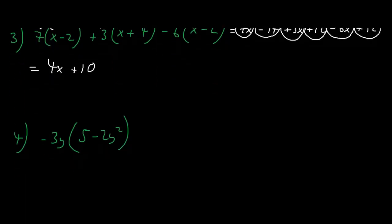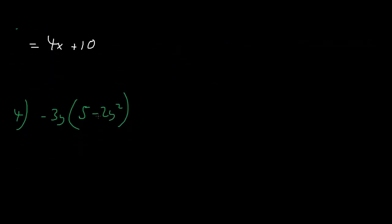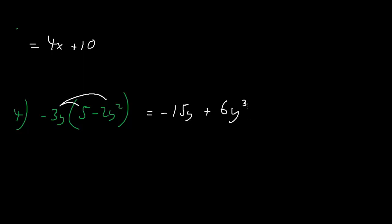Now let's move to expression number 4. Here minus 3y times 5 is minus 15y. And minus 3y multiplied by minus 2 times y squared is equal to 6y to the power of 3. So this expression expanded is minus 15y plus 6y to the power of 3.